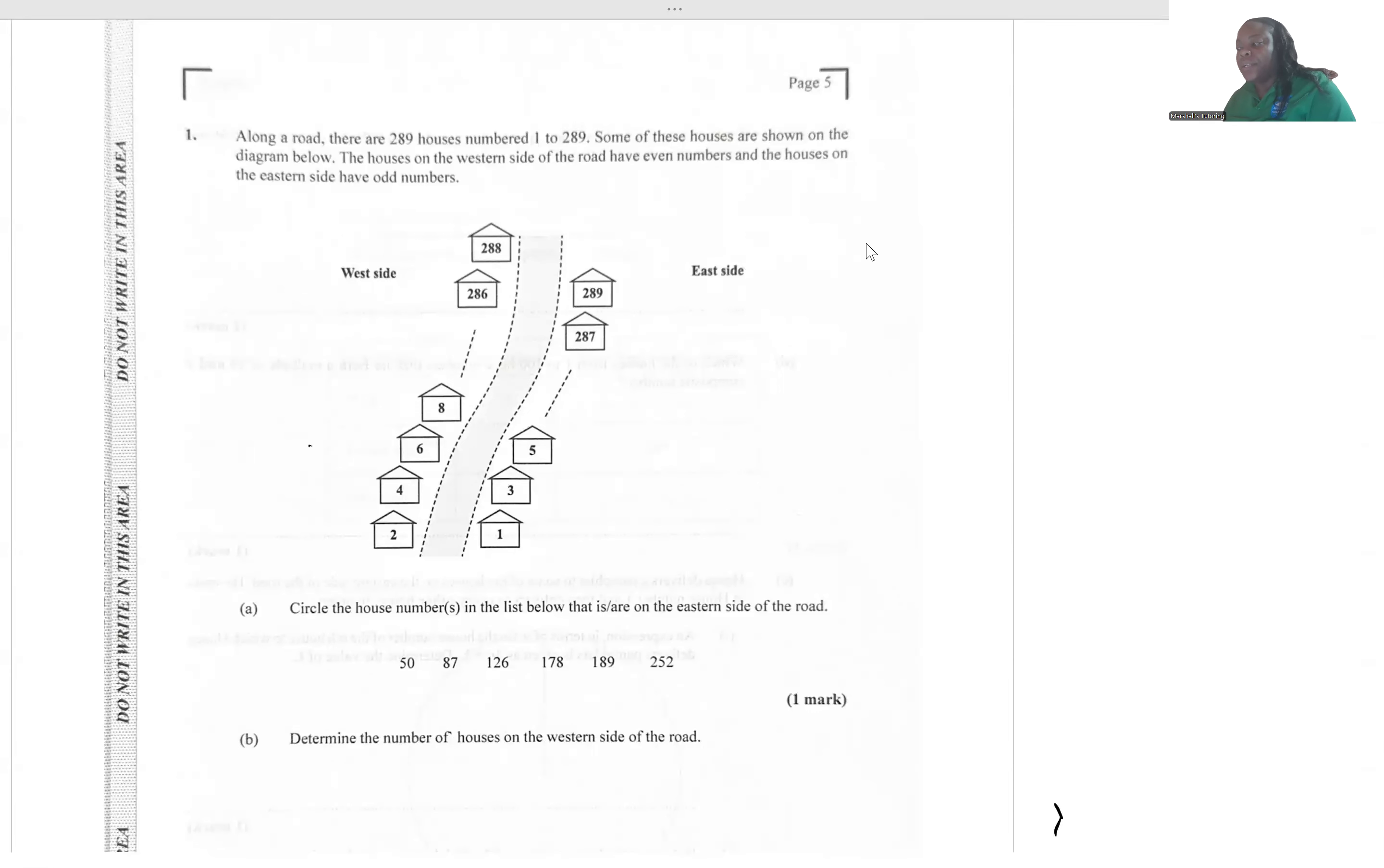Circle the house numbers in the list below that is on the eastern side of the road. If we look on the eastern side of the road, we're seeing only odd numbers, so therefore we have to circle the odd numbers from this list: 87 and 189.